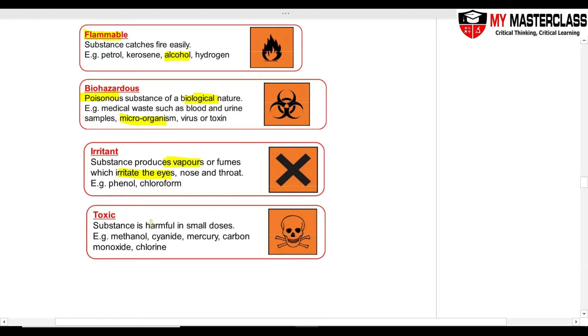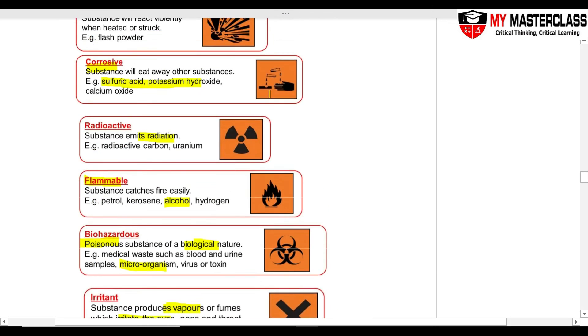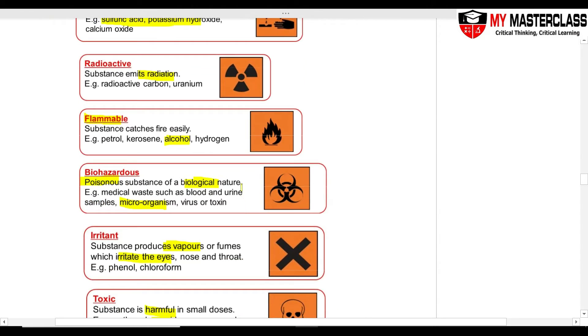Toxic, this is harmful substances, it's more doses. Good to know your cyanide, mercury, these are all toxic and then you can see a skull. These are all the symbols that you will see on the chemicals or in the lab.